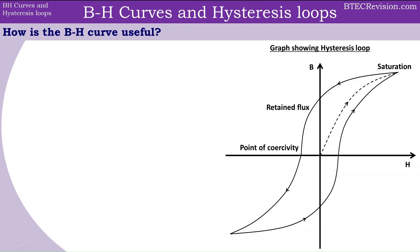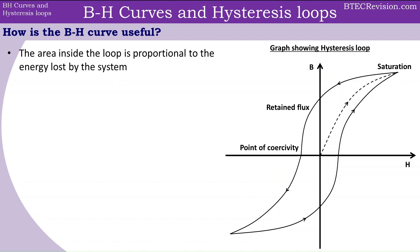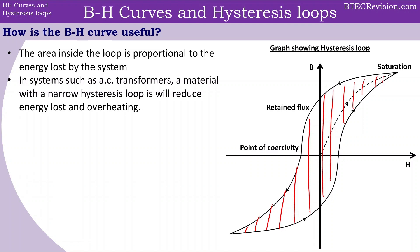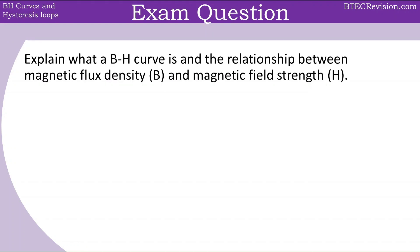How is the BH curve useful? The area inside this loop — the region shown being shaded in — is proportional to the energy lost by the system. In systems such as AC transformers, a material with a narrow hysteresis loop is going to reduce the energy loss and therefore reduce overheating. Now pause the video here and attempt this exam question.